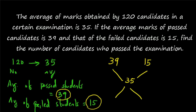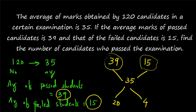So this is how you write the formula. The average of passed candidates is 39 and the average of failed candidates is 15. When combined together, you get the total average of 35. You can apply the principle of allegation. The difference between 39 and 35 is 4. The difference between 35 and 15 is 20. So the ratio is 20 to 4. If x is the passed candidates and y is the failed candidates, then x to y equals 20 to 4.